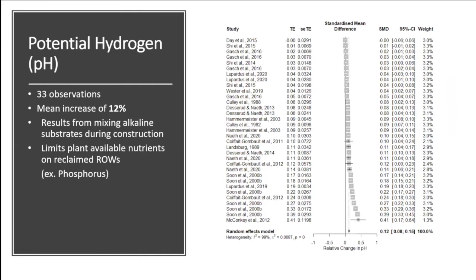Let's look at pH. In our arid regions, the concentration of calcium carbonate — the lime, the white stuff you see in the soil — is what controls the pH. Most soils that have lime in them have a pH between 7.8 and 8.2. If plants are adapted to that, no problem. But in an agronomic field, you might start seeing problems with phosphorus deficiency because phosphorus likes to precipitate out when pH gets above 7.8 and precipitates with calcium. The mean pH increase was about 12%.